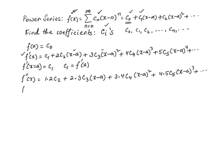Next we find the second derivative. If we evaluate the second derivative at x equal to a, these terms go away because a minus a is zero. The only thing left is one times two times c two, which is two factorial times c two. So c two equals f double prime of a over two factorial.